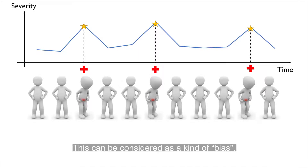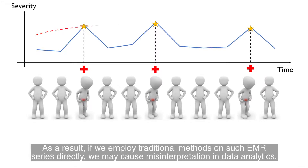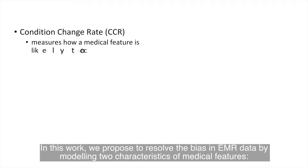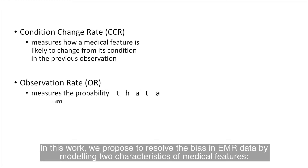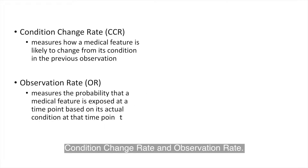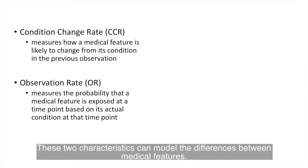This can be considered as a kind of bias. As a result, if we employ traditional methods on such EHR series directly, we may cause misinterpretation in data analytics. In this work, we propose to resolve the bias in EHR data by modelling two characteristics of medical features: condition change rate and observation rate. These two characteristics can model the differences between medical features.